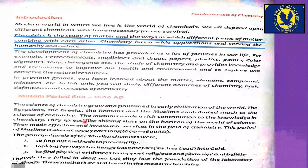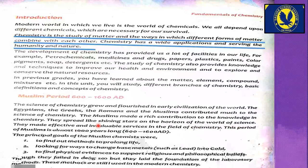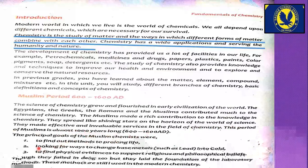All these civilizations contributed to the science of chemistry. The Muslims made a rich contribution to the knowledge of chemistry — they spread like shining stars on the horizon of the world of science. This period of Muslims is almost 1000 years long, from 600 to 1600 AD. The principal goal of the Muslim chemists was to find out methods to prolong life.